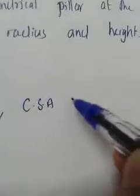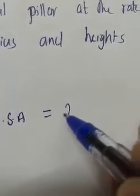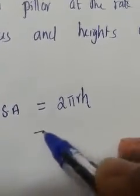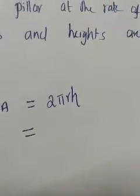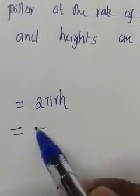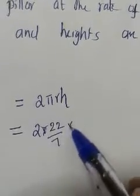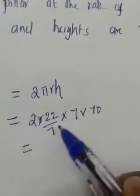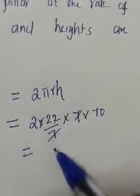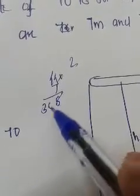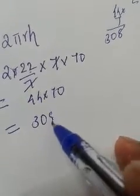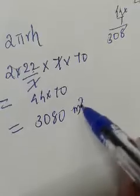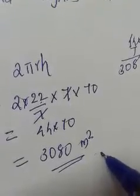The curved surface area of a cylinder is given by the formula 2πrh. Substituting the values: 2 × (22/7) × 7 × 70. The 7 in the denominator and the radius 7 cancel out, leaving 2 × 22 × 70. That gives 44 × 70. Since 44 × 7 = 308, then 44 × 70 = 3080. So the curved surface area is 3080 m². The unit is m² because measurements are in meters.